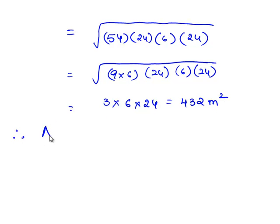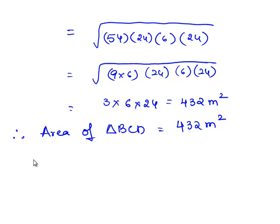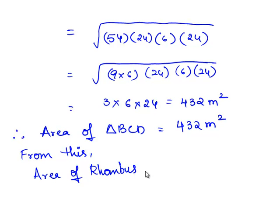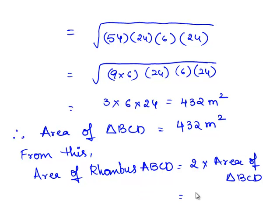Therefore, area of triangle BCD is equal to 432 square meters. From this, the area of rhombus ABCD is equal to 2 times the area of triangle BCD. Therefore, area of rhombus ABCD = 2 × 432 = 864 square meters.